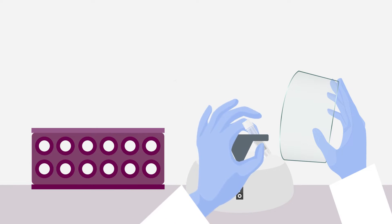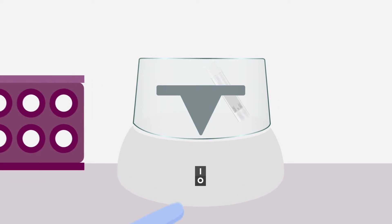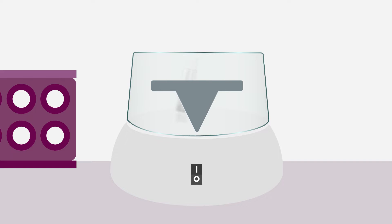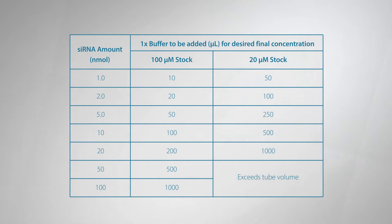First, pulse spin the dry siRNA to ensure that the siRNA pellet, that might not be visible, is at the bottom of the tube. Determine the final resuspension volume using this table and add that amount of 1x siRNA buffer to the siRNA. For example, if you receive 5 nanomoles of siRNA and you want to make a 100 micromolar stock solution, add 50 microliters of 1x siRNA buffer.